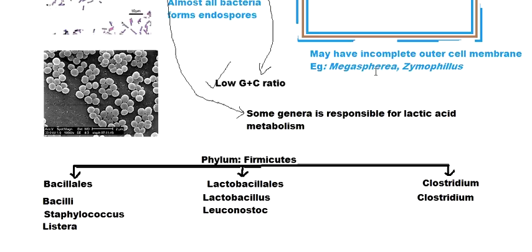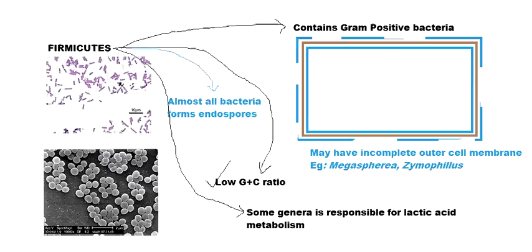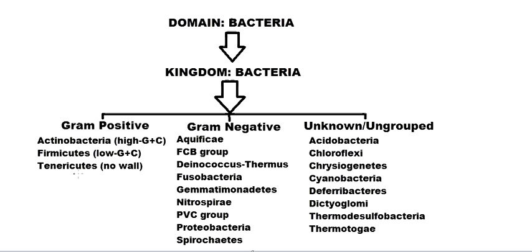Clostridium also contains many genera with incomplete cell membranes. Clostridium is obligately anaerobic and contains many types of pathogens, like Clostridium botulinum which causes botulism, and Clostridium tetani which causes tetanus. That is pretty much all about Firmicutes — hope you liked the video, please like, comment, and subscribe. In the next video we are going to talk about Tenericutes. Thank you and bye.